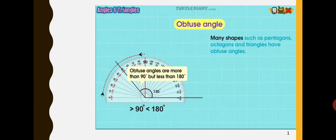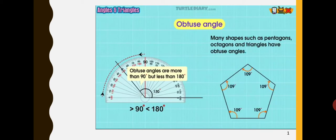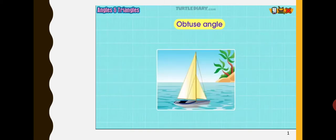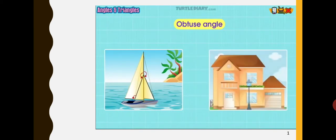Many shapes such as pentagons, octagons, and triangles have obtuse angles. Let's see what makes an obtuse angle. You are walking by the water and you see a beautiful sailboat. You notice that the sails have obtuse angles. You are playing outside with friends when you look up and notice that the top of your house is an obtuse angle.